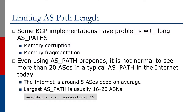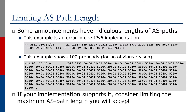We're going to talk about limiting ASPath length. Some BGP implementations have problems with long ASPaths, as this often causes memory corruption and fragmentation. Even when using ASPath prepends, it is not normal to see more than 20 ASes in a typical ASPath on the internet today. The internet is around five ASes deep on average, and the largest ASPath usually has about 16 to 20 ASNs. Some announcements have ridiculous lengths of ASPaths as shown in the example on the screen. The first example is an error in one IPv6 implementation. The second example shows 100 prepends for no obvious reason.